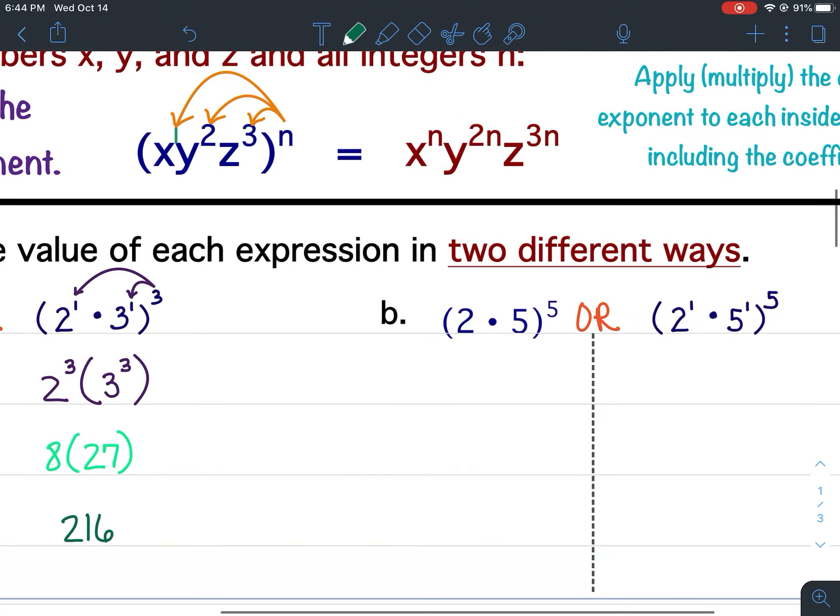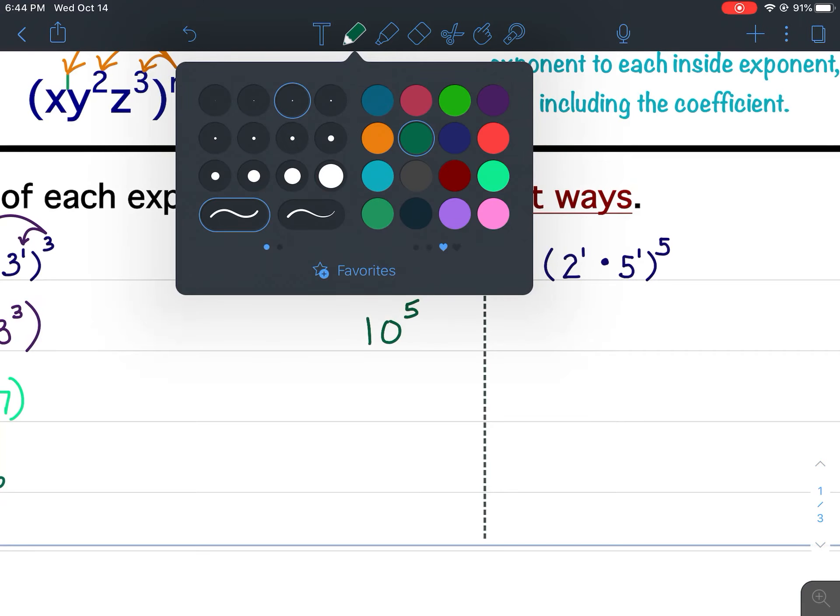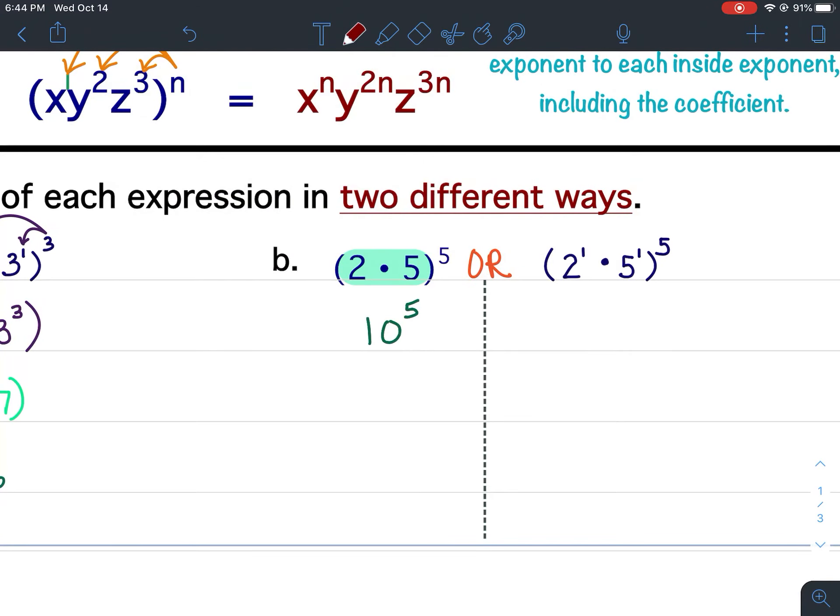So let's look at b. Obviously we would multiply what is inside the parentheses first because it would be easier. 2 times 5 would be 10. So this would be 10 to the 5th power, and 10 to the 5th power. Remember I told you when you raise 10 to any power, it's going to be 1 and then followed by whatever the exponent is, that's the number of zeros. So I need 5 zeros. So 1, 2, 3, 4, 5.